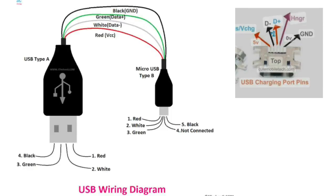The major work of the data plus and data minus is to help connect the USB to the computer system. Without the data minus and the data plus on the logic board, or if not properly soldered on the charging port, the mobile phone can't communicate with the computer system. That is the major work of the DM and DP — they also play an important role during flashing of the mobile phone. Thank you.